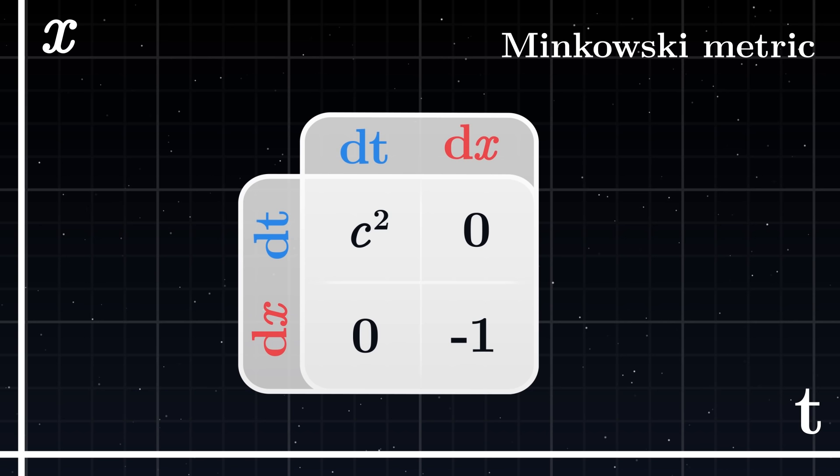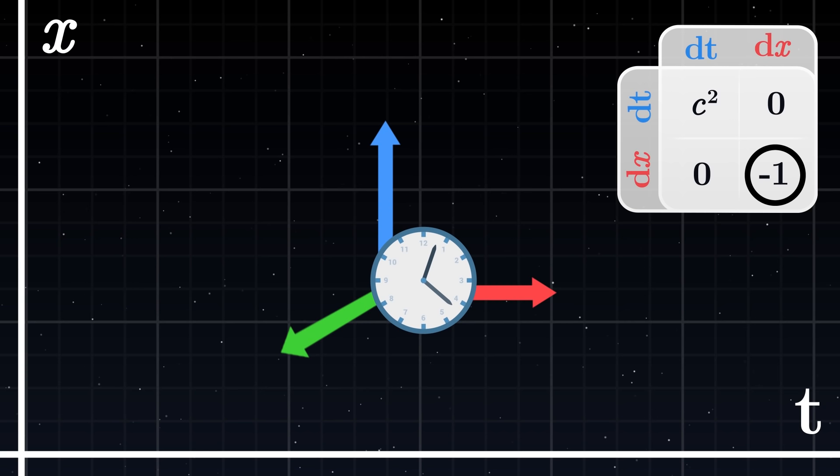At first glance, the Minkowski metric may seem rather simple. But it is actually very special, because the metric contains a negative one. This negative one is a strange and fundamental property of our universe. It tells us that the dimensions of space and time are fundamentally different.